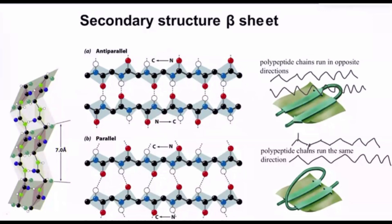Beta pleated sheets, or beta sheets, is one of the examples of the secondary structures, besides the alpha helical structure. There are hydrogen bonds between beta strands forming a twisted pleated appearance. Polypeptide strands may run in the same direction or in the reverse direction, and based on that, there are two major types of beta pleated sheets.